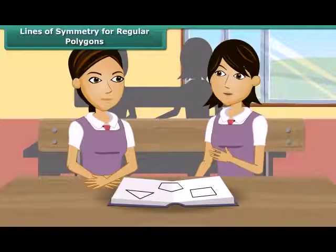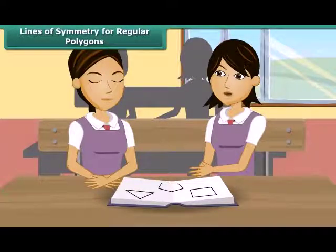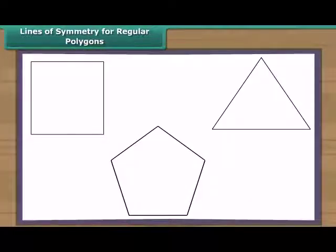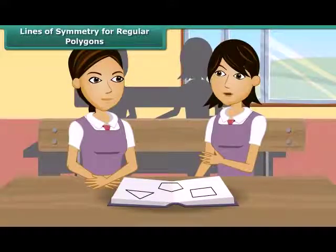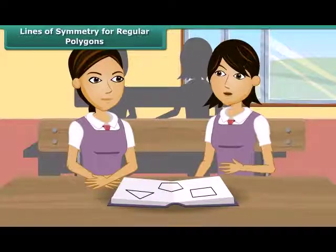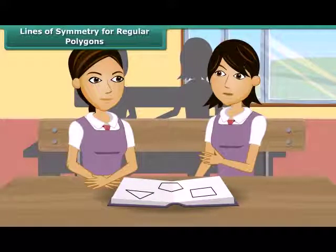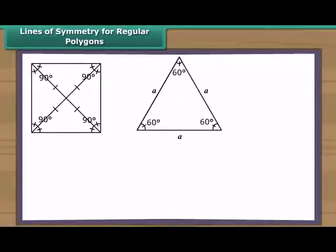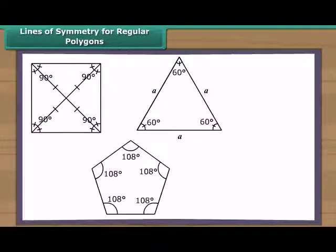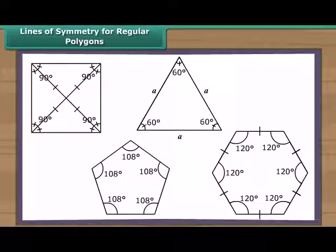Now I will tell you about lines of symmetry in regular polygons. Do you know what a regular polygon is? It is a closed figure made up of several line segments, and a triangle is a polygon made up of at least three line segments. A regular polygon is one whose all the line segments are equal, and the measures of all the angles are equal. Therefore, a square, an equilateral triangle, a regular pentagon, and a regular hexagon are examples of regular polygons.